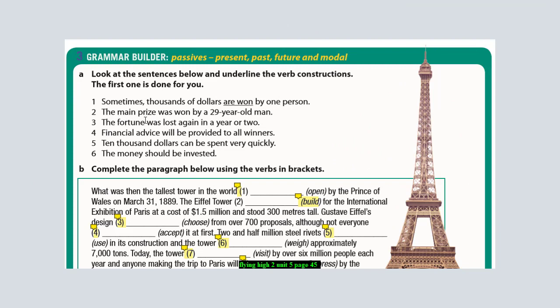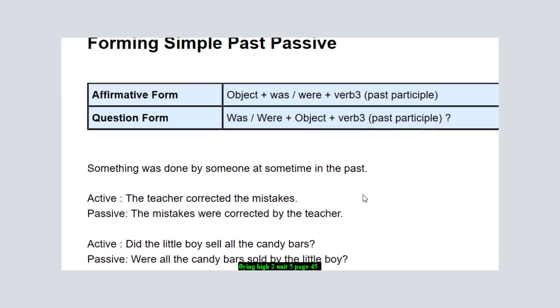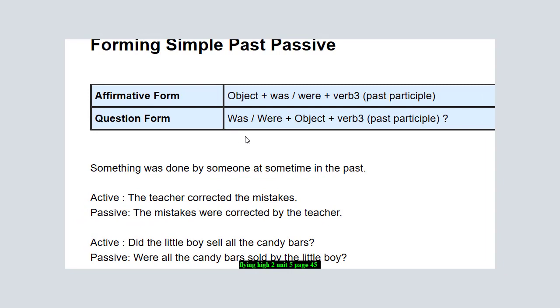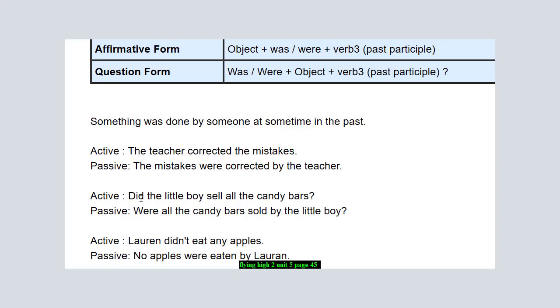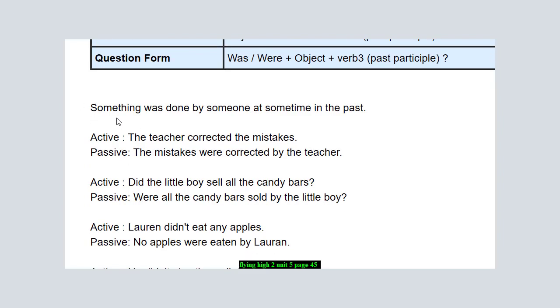Notice here the use of 'was'. Here it changed - in the beginning here we used the present, and here he used the past tense. Let's have a look at the past tense. It is the same as the present tense, but instead of using 'is', 'are', 'am', we use 'was' or 'were'. As we know, 'was' for the singular and 'were' for the plural. Then object, then verb three, past participle. The main use of the passive in past tense: something was done by someone at some time in the past.